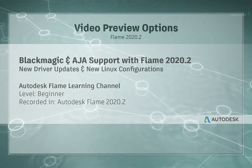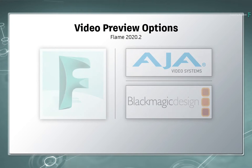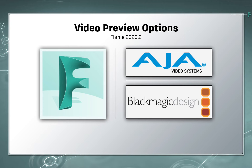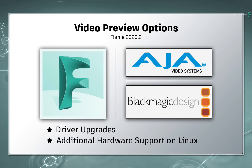In the Flame 2020.2 update, Flame supports a variety of AJA and Blackmagic Design hardware configurations. With this release, there have been a number of driver upgrades on Mac and Linux, as well as additions to hardware support for Flame products running on Linux.